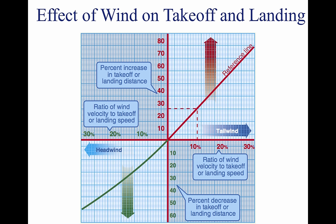The effect of wind on takeoff distance is large and must be properly considered. The effect of a headwind is to allow the aircraft to reach the takeoff speed at a lower ground speed, while the effect of a tailwind is to require the aircraft to achieve a greater ground speed to attain the lift-off speed. Any attempt to take off below the recommended speed means that the aircraft could stall, be difficult to control, or have a very low initial rate of climb. In some cases, an excessive angle of attack may not allow the aircraft to climb out of ground effect. An excessive airspeed at takeoff may improve the initial rate of climb but will produce an undesirable increase in takeoff distance. The takeoff distance varies with the square of the takeoff velocity.